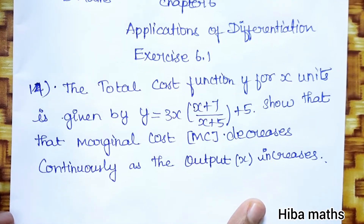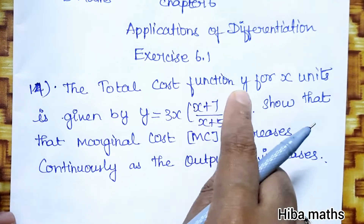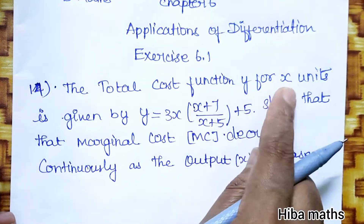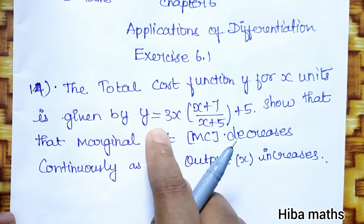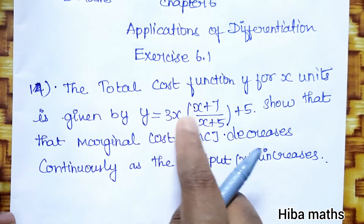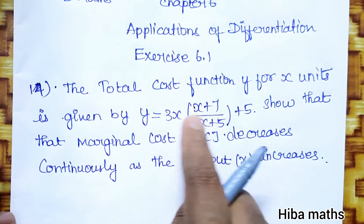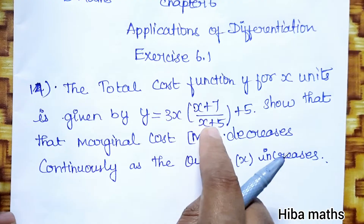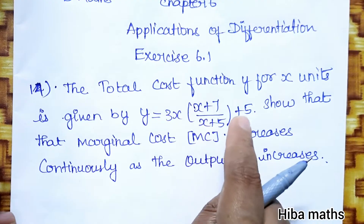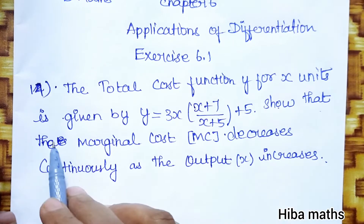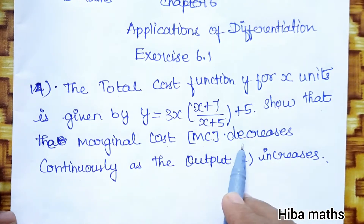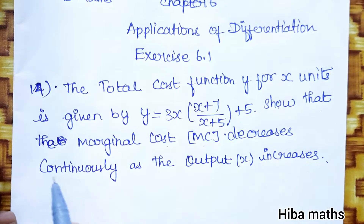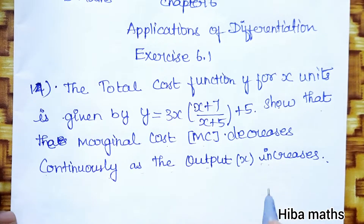The total cost function y for x units is given by y equals 3x times (x plus 7) divided by (x plus 5), plus 5. Show that the marginal cost MC decreases continuously as output x increases.